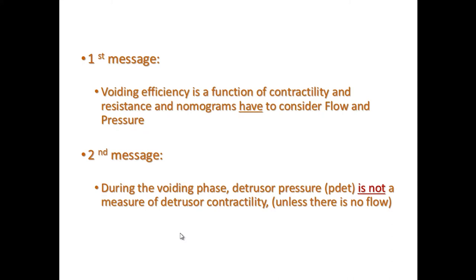Since emptying efficiency is a function of both the detrusor and the urethra, nomograms must always consider both flow and pressure. The second message is that during the emptying phase, what we call detrusor pressure is a misleading term, because detrusor pressure has nothing to do — or not simply — with detrusor contractility. Detrusor pressure is the pressure found inside the bladder cavity after the detrusor contracts and after the urethra opens.